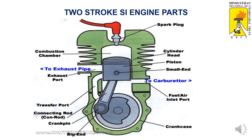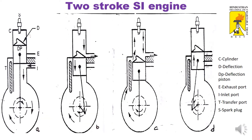Next, I will go to the working principle. This is the two-stroke SI engine working principle line diagram. Here is the cylinder, the exhaust port — also called the outlet port — the spark plug, and the transfer port.